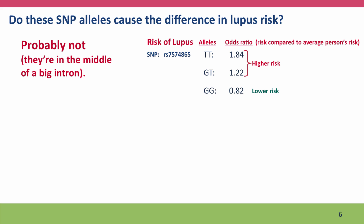A point worth reinforcing: do the SNP alleles that genome-wide association studies find actually cause the differences in phenotype being studied? Sometimes yes, sometimes no. In the case of lupus risk, probably not — because using HapMap, we can see this SNP is in the middle of a large intron within a gene that has been associated with lupus. Other SNPs in the gene are also associated with lupus, but a SNP in the middle of an intron is probably not causing the difference.